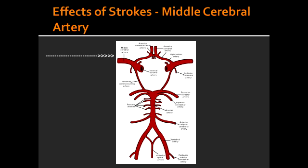What is a symptom that can occur due to the motor cortex being affected in a stroke at the level of the middle cerebral artery? Due to the effects on the motor cortex, this would lead to a contralateral paralysis of the upper limb and face.